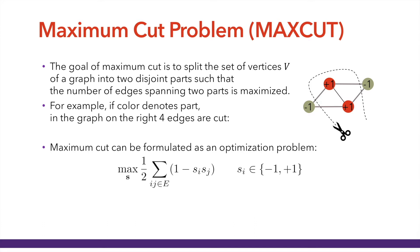So what is maximum cut? The goal of maximum cut is to split the set of vertices V of a graph into two disjoint parts such that the number of edges spanning the two parts is maximized. For example, on the right here, if color denotes part — red nodes in one part and green nodes in another — in this graph four edges are cut. If we assign each vertex a binary variable, plus or minus one, a binary spin variable, then it can be formulated as an optimization problem as shown.